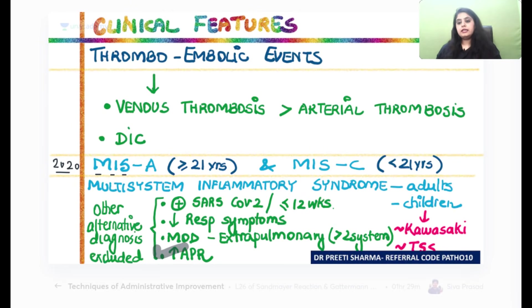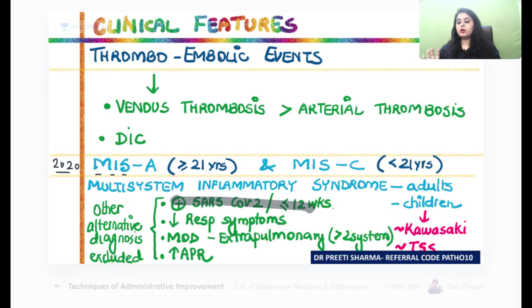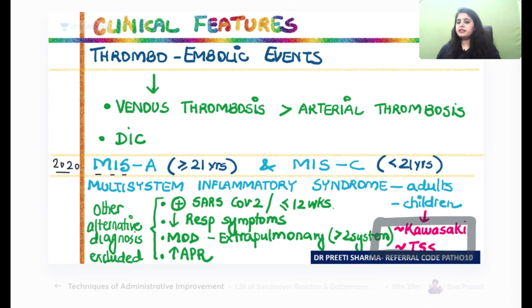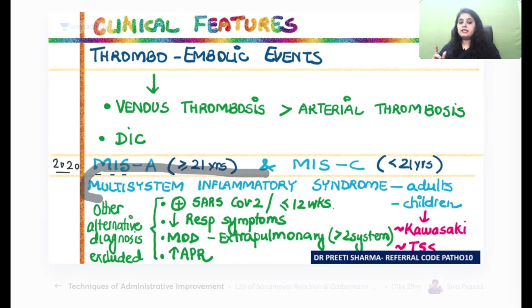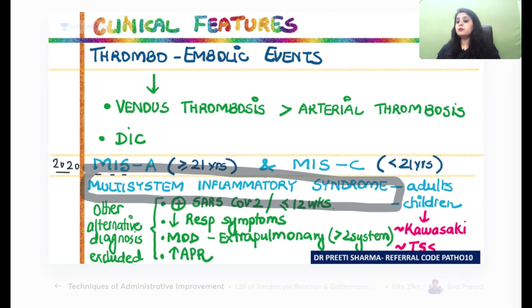MIS in Adults is called MISA; MIS in Children is called MISC. The cutoff age is 21 years. The criteria: COVID-positive patient, minimal respiratory symptoms, more extra-pulmonary system involvement, increased acute-phase reactants (e.g., Interleukin-6, CRP), with all other causes of multi-system involvement excluded. In children, cases were presenting like Kawasaki disease or Toxic Shock Syndrome — particularly reported in Maharashtra during last year's peak.